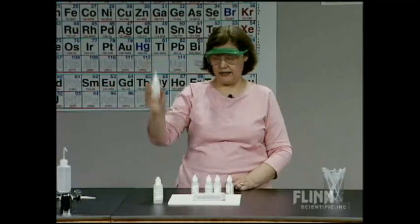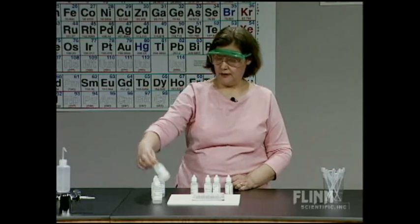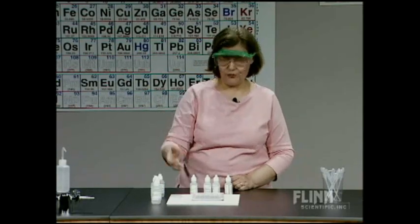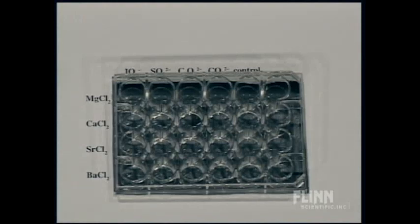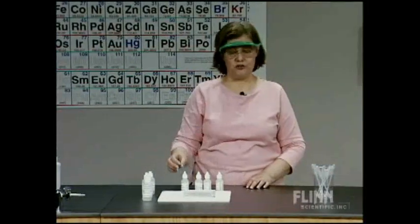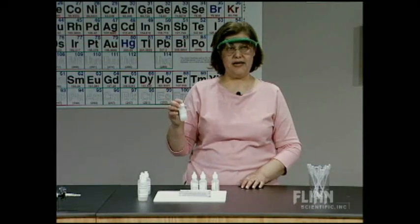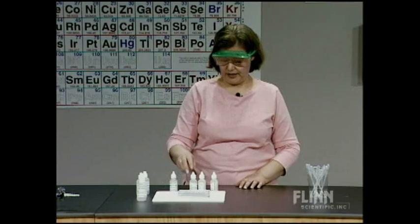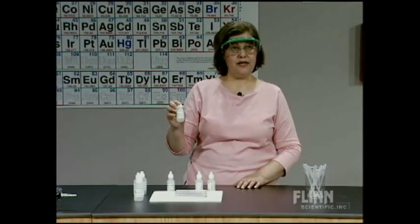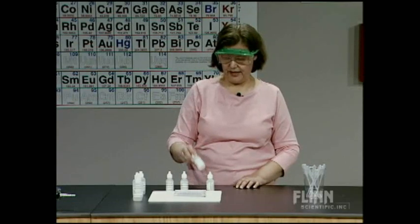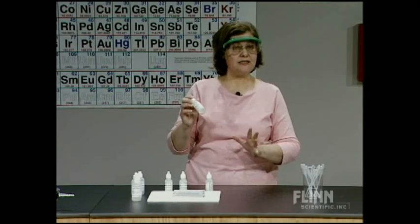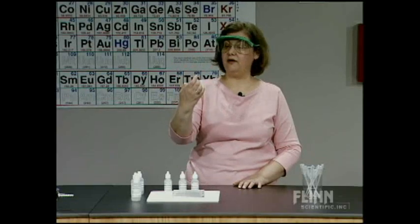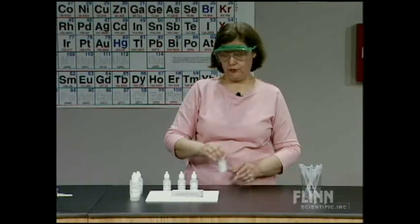We're going to study a trend in the chemical properties of the alkaline earth metals using magnesium, calcium, strontium, and barium. I have magnesium chloride, calcium chloride, strontium chloride, and barium chloride. I'm going to react all of those solutions with a series of anions: potassium iodate (IO₃⁻), sodium sulfate (Na₂SO₄) with the sulfate anion, ammonium oxalate (C₂O₄²⁻), and finally sodium carbonate (CO₃²⁻).